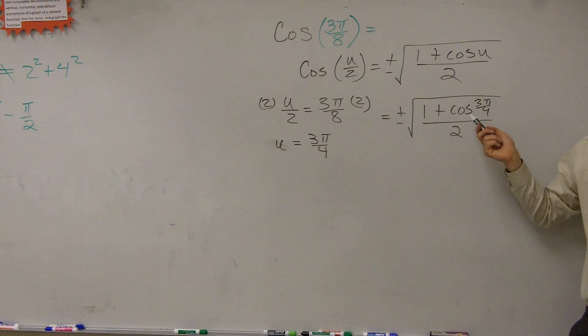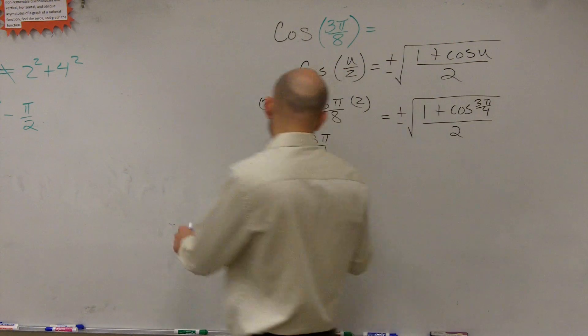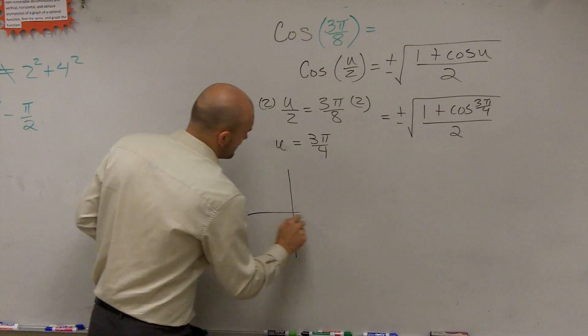So now we need to evaluate. So now it's asking us what's the cosine of 3π/4, which is negative square root of 2 over 2. Also, looking at the unit circle, we need to look at the cosine value.